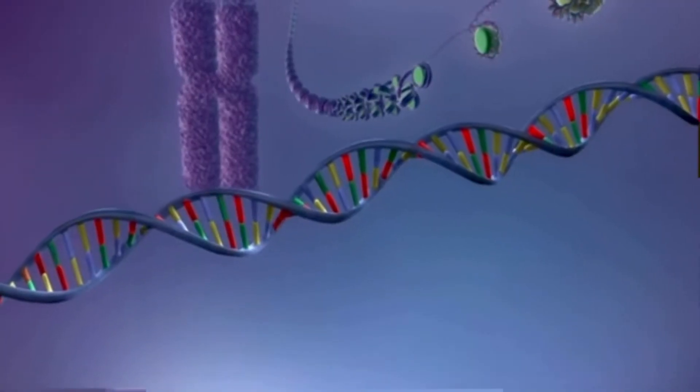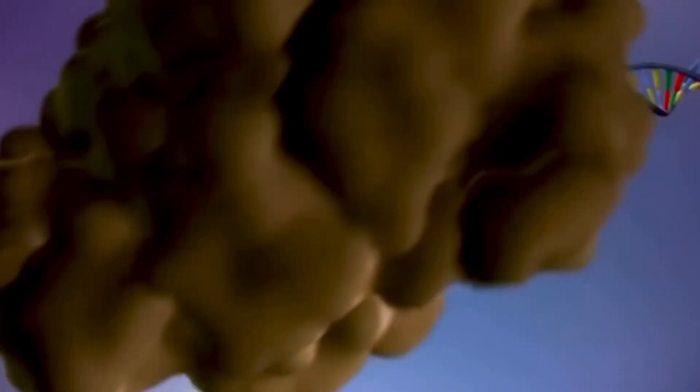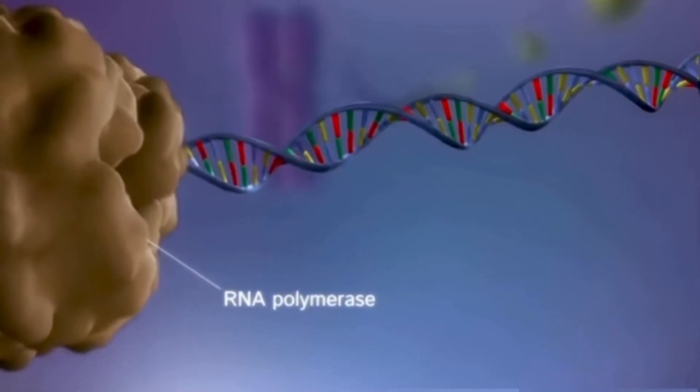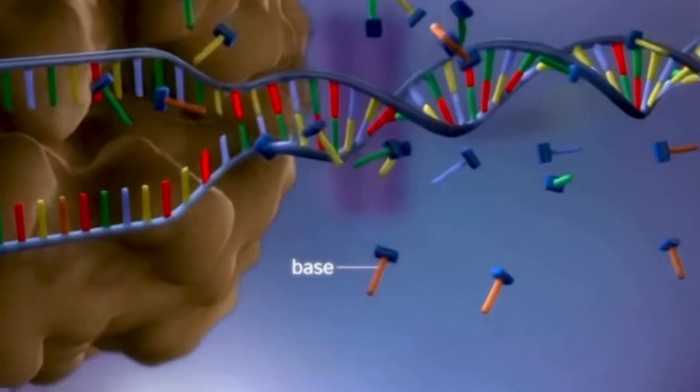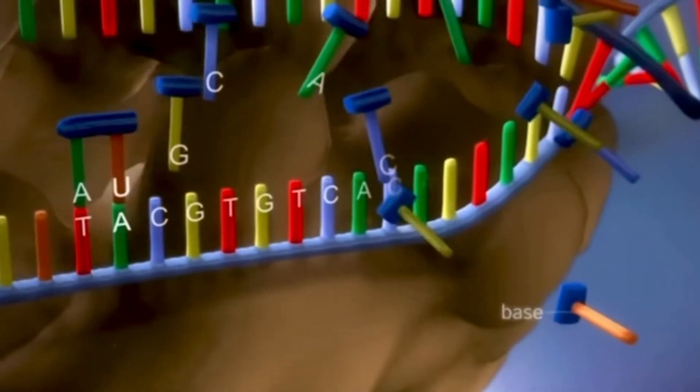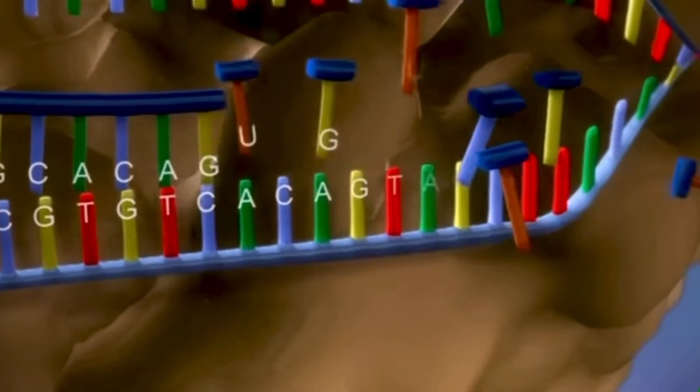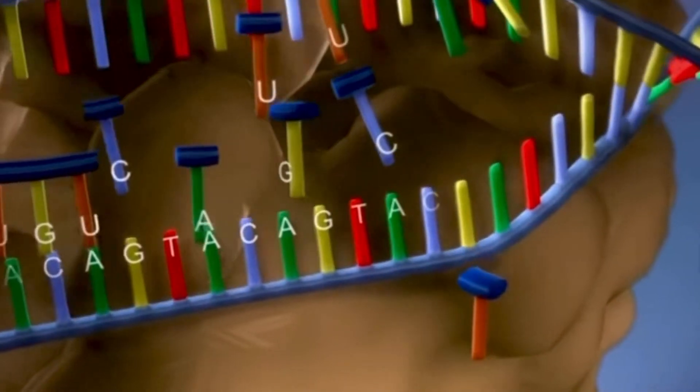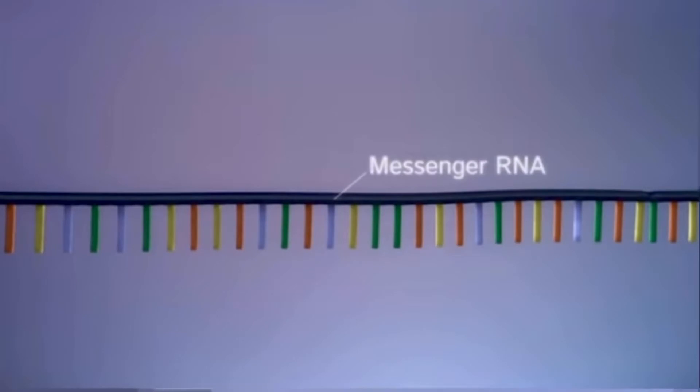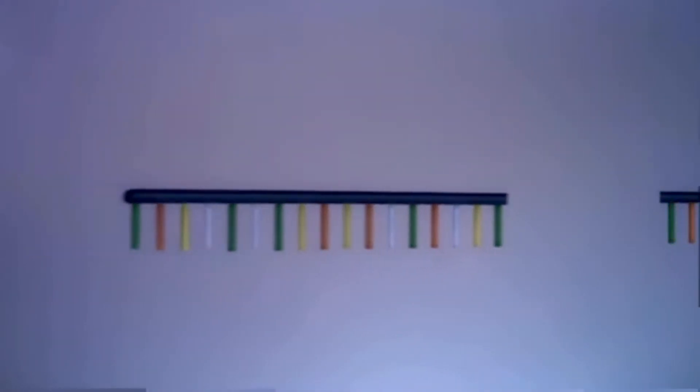When a gene is switched on, an enzyme called RNA polymerase attaches to the start of the gene. It moves along the DNA making a strand of messenger RNA out of free bases in the nucleus. The DNA code determines the order in which the free bases are added to the messenger RNA. This process is called transcription. Before the messenger RNA can be used as a template for the production of proteins, it needs to be processed. This involves removing and adding sections of RNA.